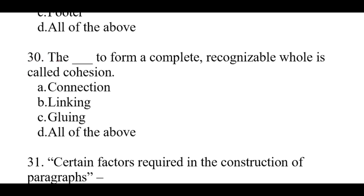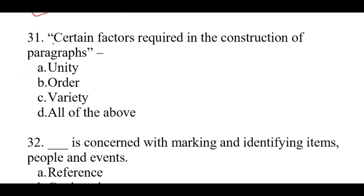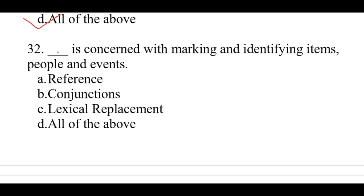Question number 30: The ability to form a complete, recognizable whole is called cohesion. The right option is D: All of the above — connection, linking, gluing. Question number 31: Certain factors required in the construction of paragraphs. The right option is D: All of the above — A: Unity, B: Order, C: Variety. Question number 32: Reference is concerned with marking and identifying items, people and events. The right option is: Reference.